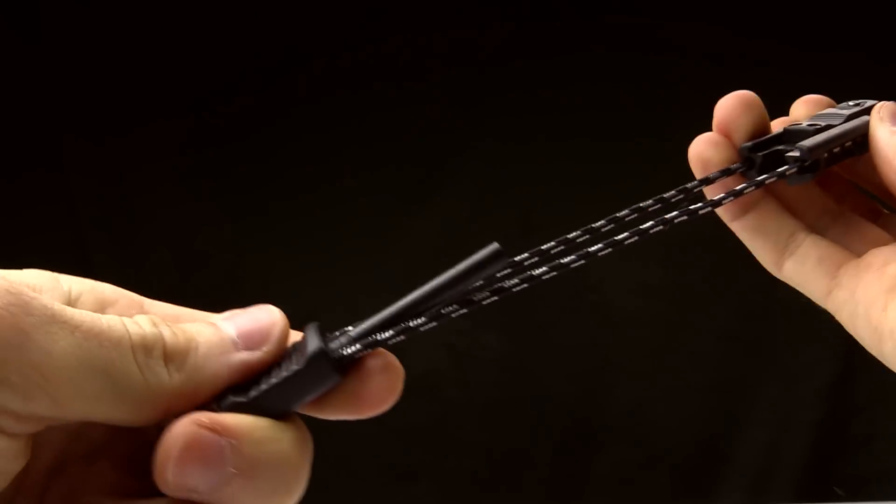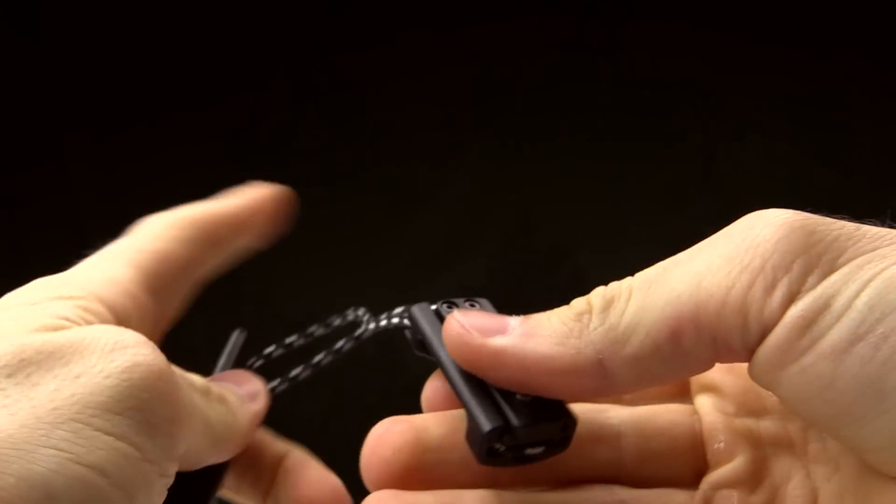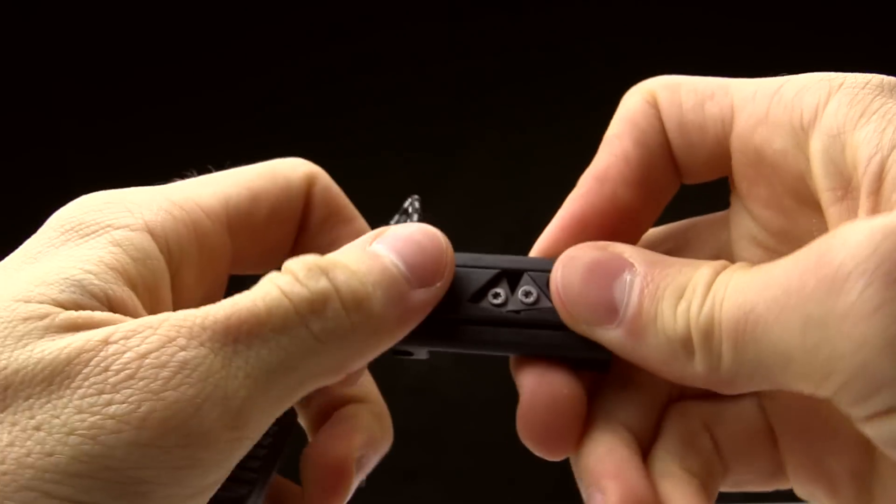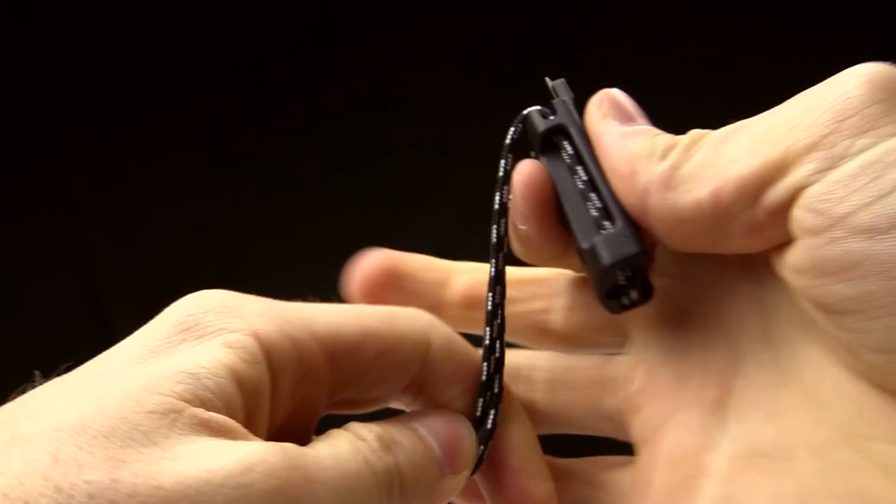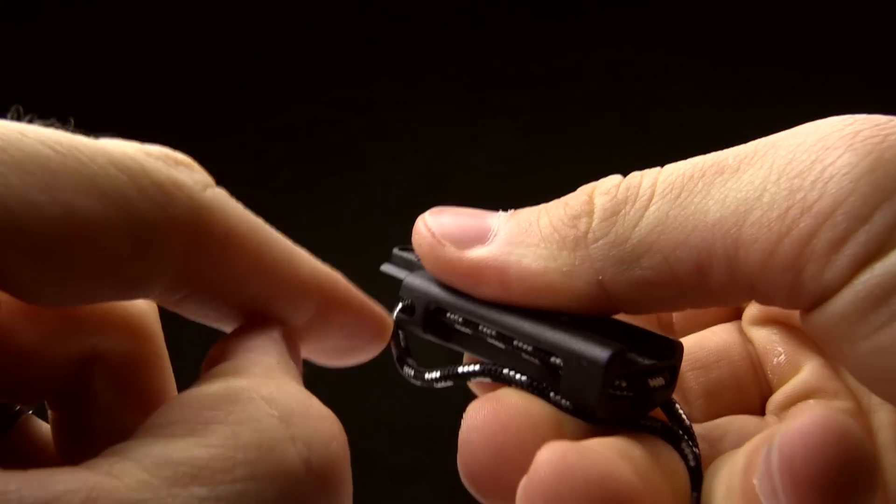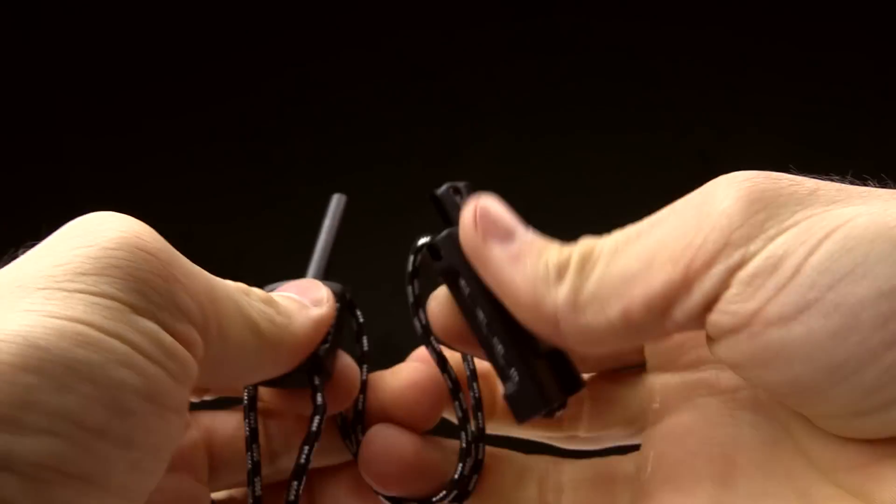Now the other part of this that you need to know about is here's your magnesium fire steel and you're just going to take this little button here and you're going to push it the other direction. When you push it that other direction it's going to open up and you will see on this edge there is a bevel there and that's what you're going to use to strike against the magnesium fire steel.